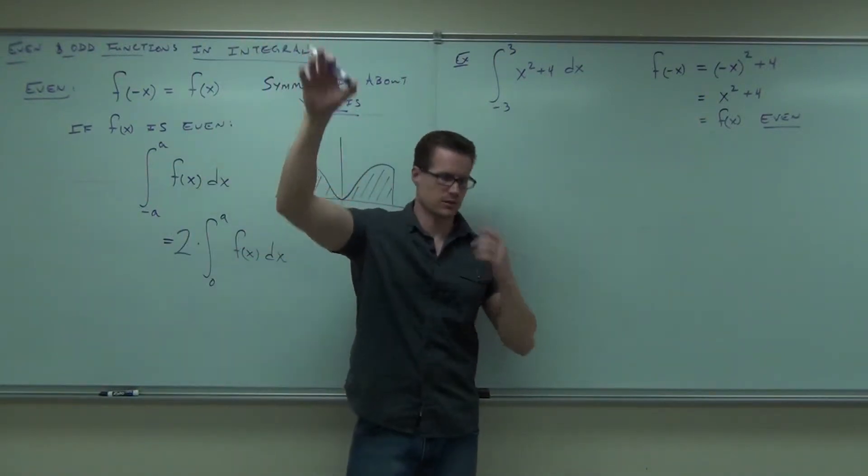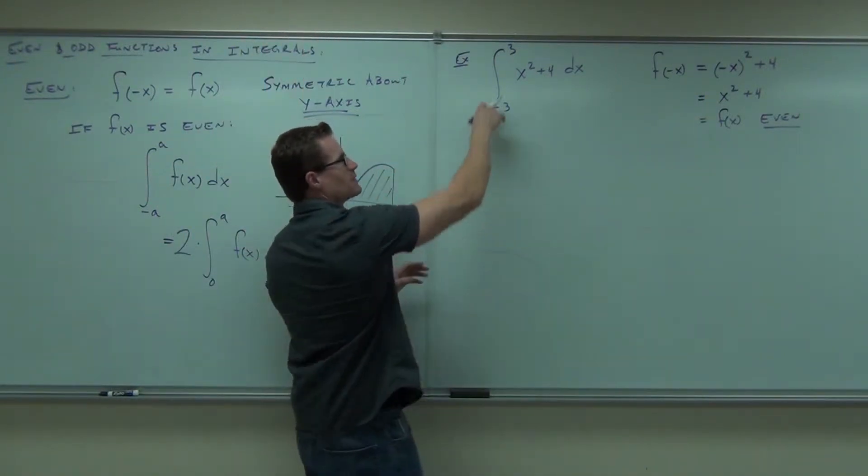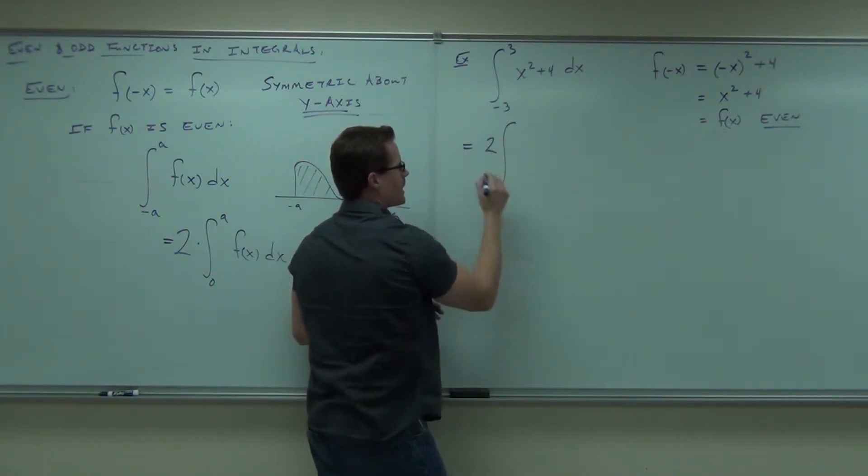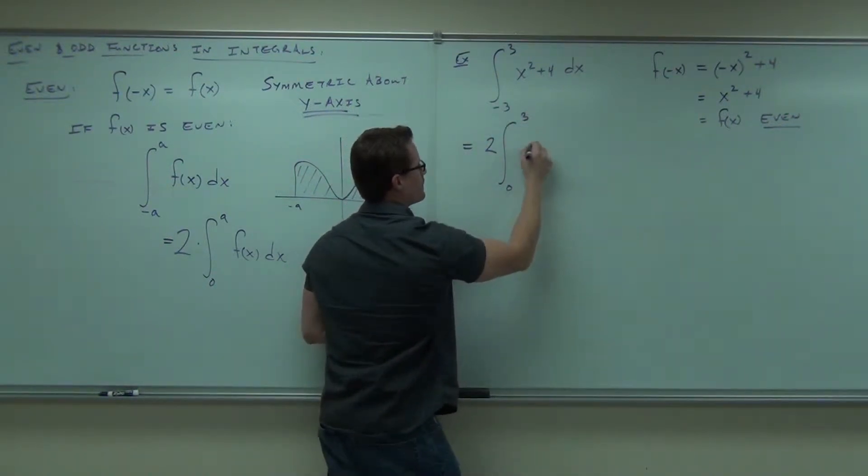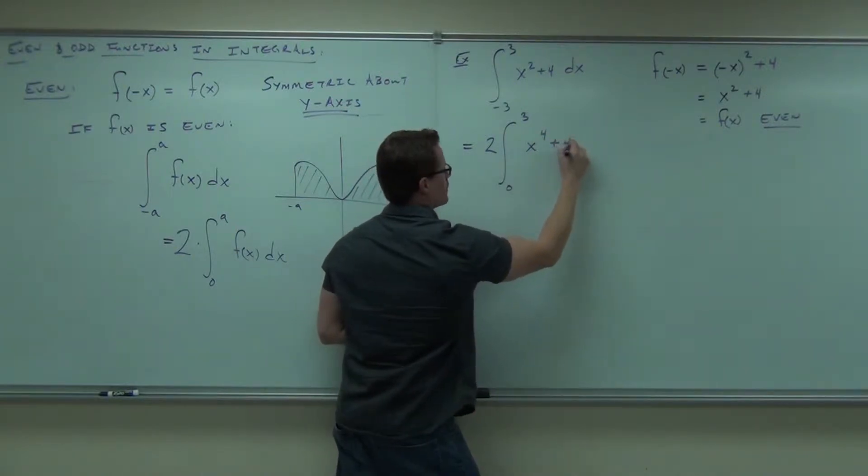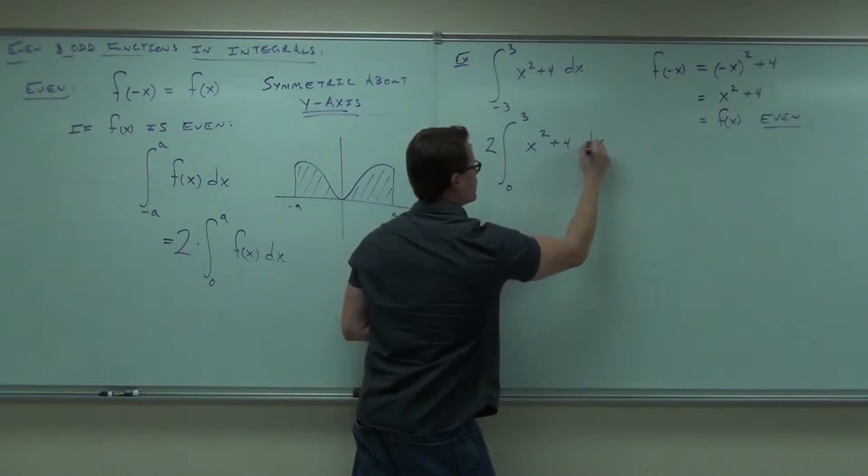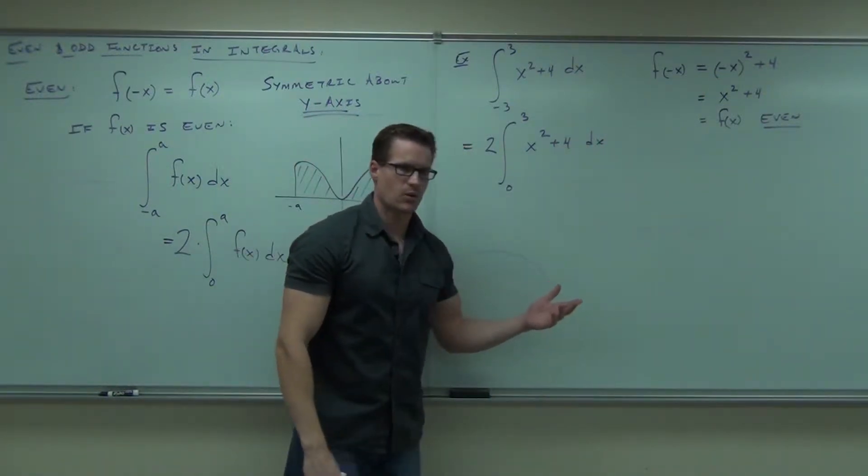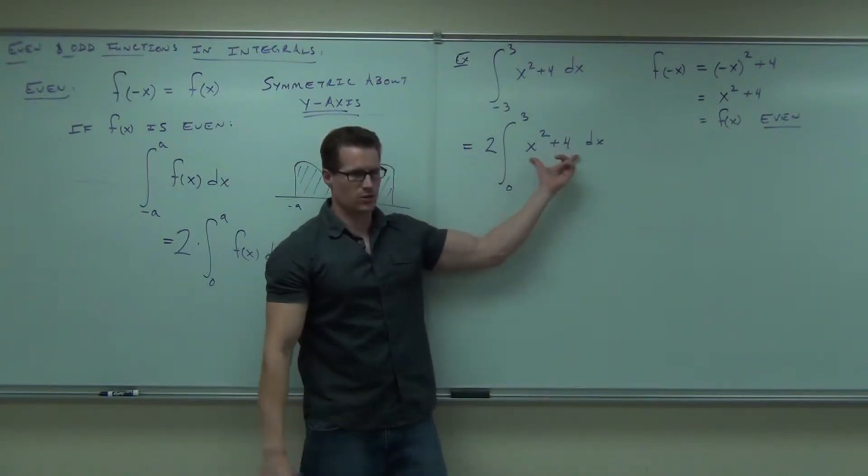How are you feeling about that one so far? Okay. What that says is that instead of doing this integral the way it is, I know that this is going to equal two times integral zero to three. Not that. x squared plus four. I'm going to let you do that the rest of the way out. What you would do here, take your integral, evaluate it from zero to four.